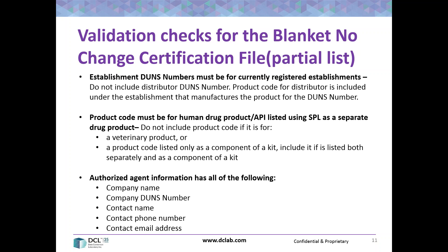The first item is that the establishment DUNS number you include in the no change certification file must be for a currently registered establishment. So if you're a US agent and you have a foreign manufacturer, and that manufacturer's registration has lapsed and was not renewed, when you go to submit this blanket no change certification file, you will get an automatic validation error and you will not be able to submit the file.